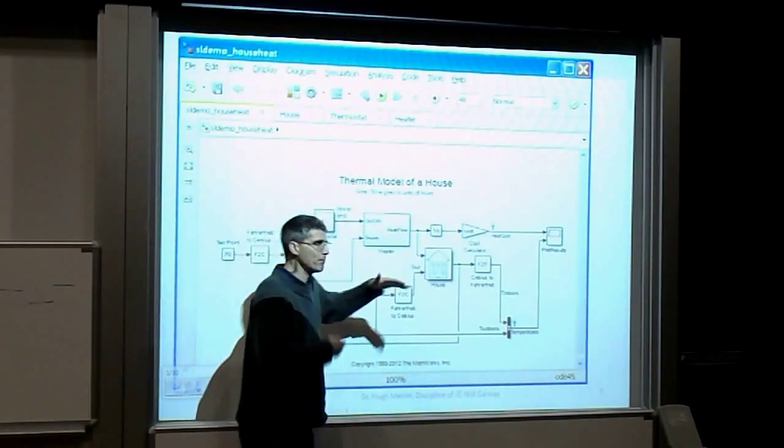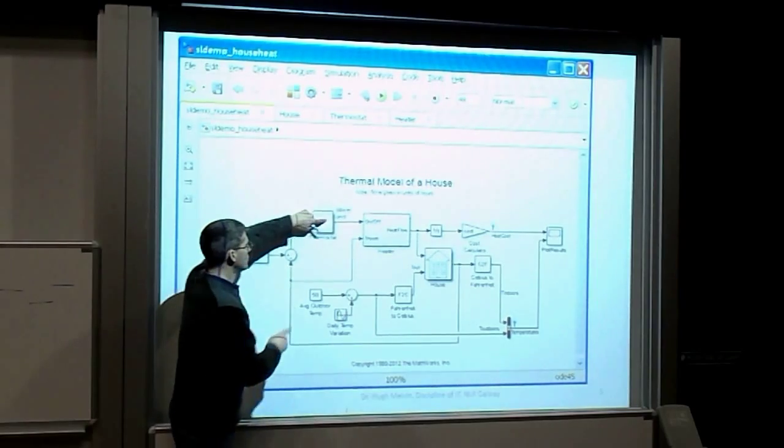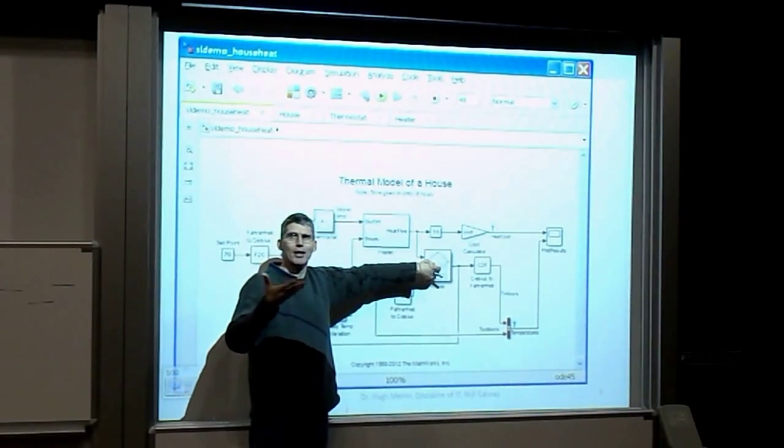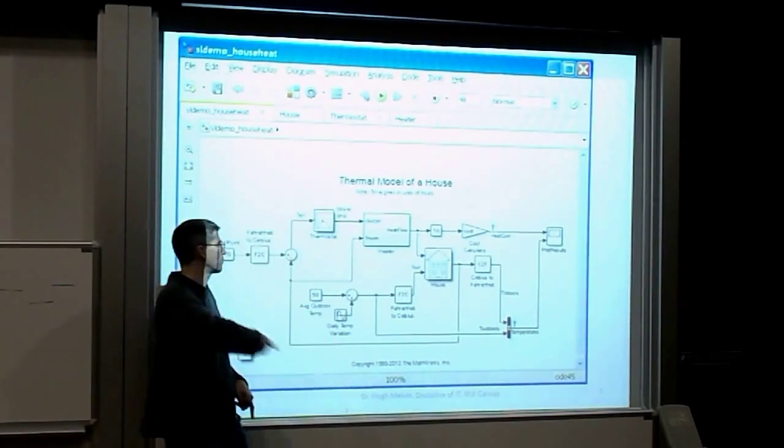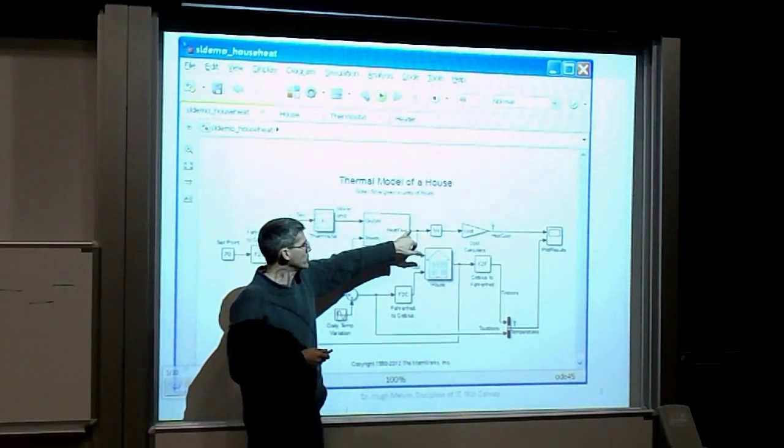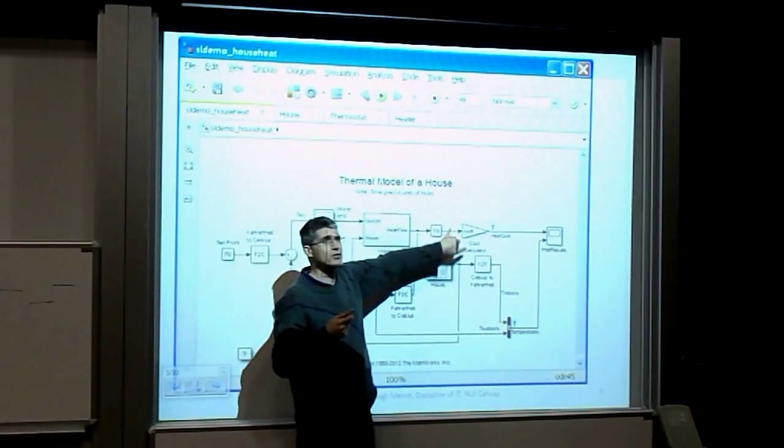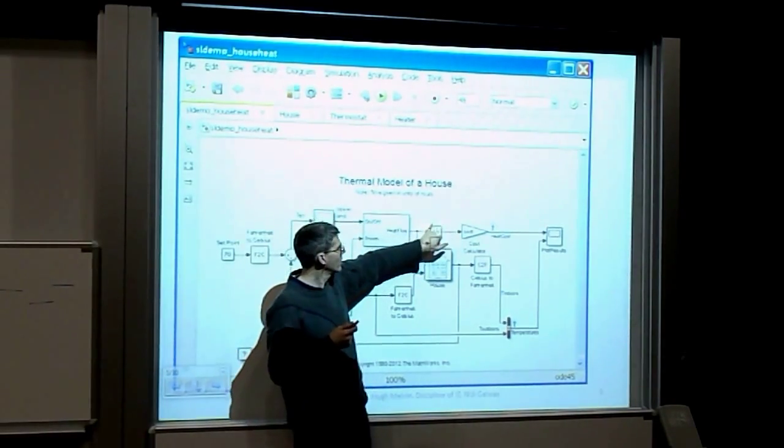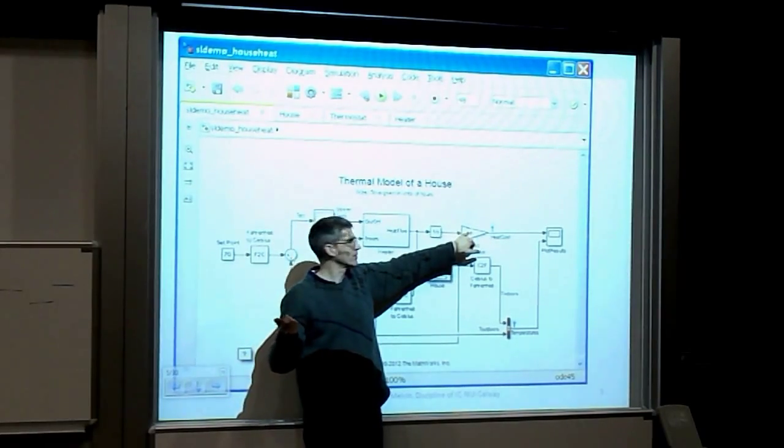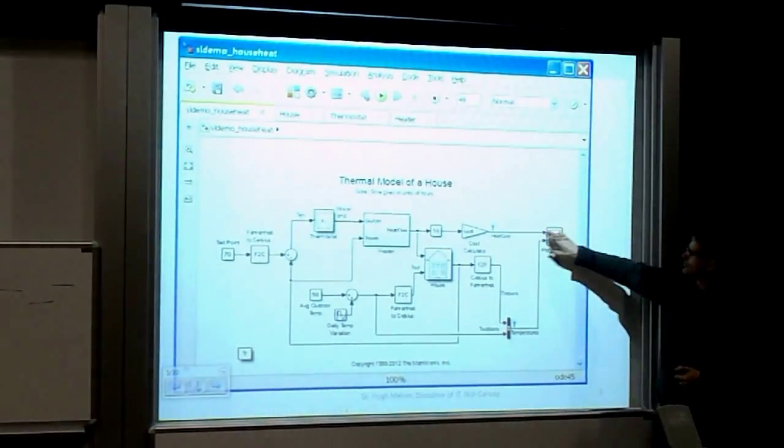Here's our energy coming into the house. The amount of energy leaving the house is dependent on the inside temperature and the outside temperature. That governs the amount of heat leaving. When the temperature falls below the set point, it turns on the thermostat, which generates heat, which heats up the house. So it's a closed loop here.